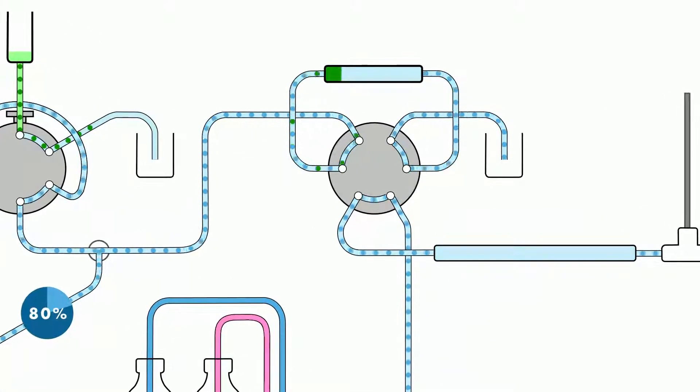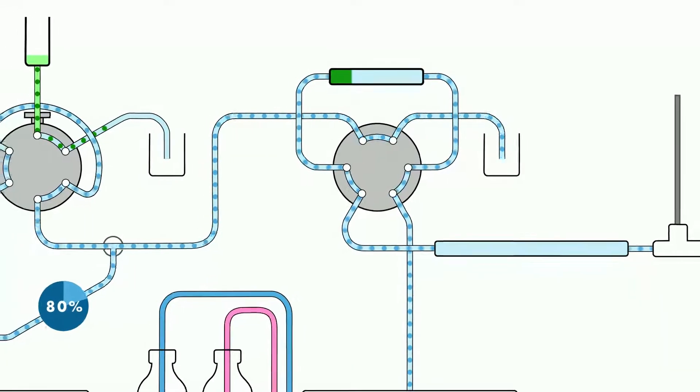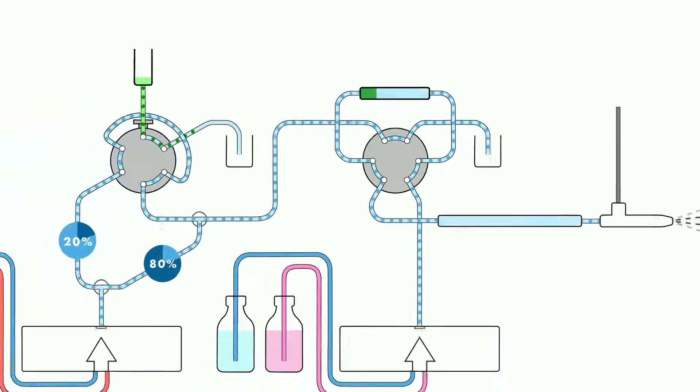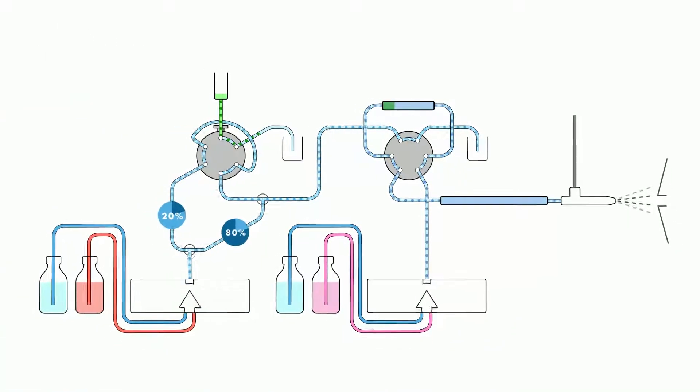After trapping the sample, the trapping column is switched into the analytical flow path with the analytical column. The chromatographic separation is performed with a gradient delivered by the zirconium ultra pump.